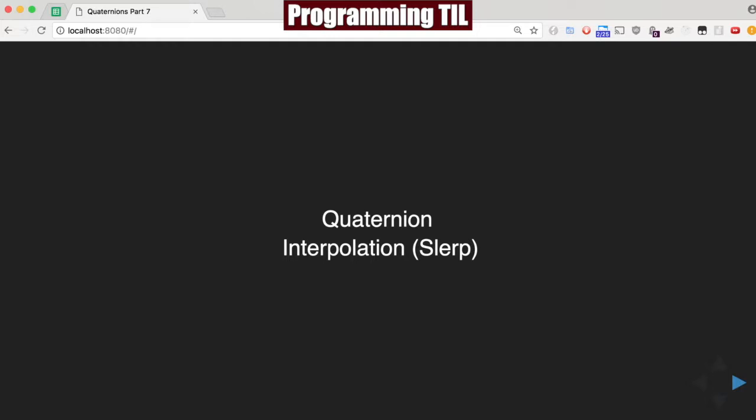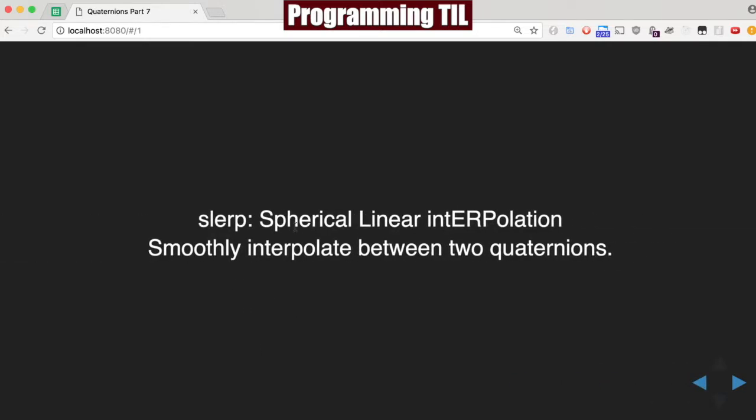Today we're going to be looking at quaternion interpolation. We're going to be looking at a specific way to do it called SLURP, and SLURP stands for Spherical Linear Interpolation. It's going to help us to smoothly interpolate between two quads.